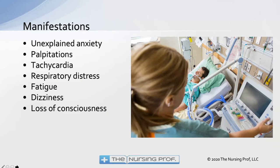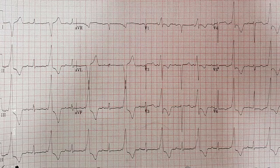Symptoms include palpitations or tachycardia, unexplained anxiety, respiratory distress, fatigue, dizziness, and loss of consciousness as heart rate picks up. This EKG shows delta waves. Pick a lead and look for the delta wave on the QRS complex — keep in mind there are normal beats and PVCs. Look only at the normal beats, the skinnier of the two complexes. I see it especially in lead two, maybe a little in leads one and three.